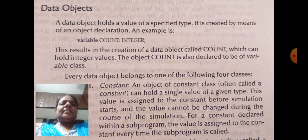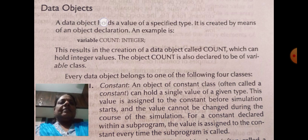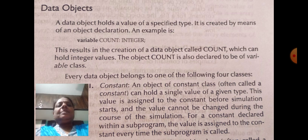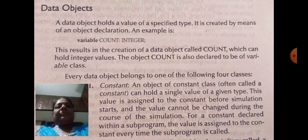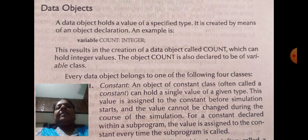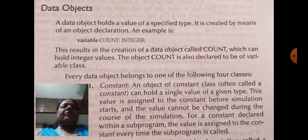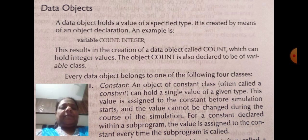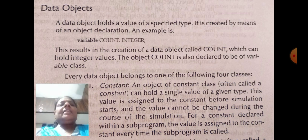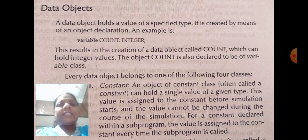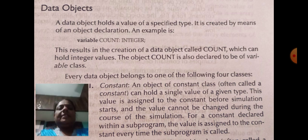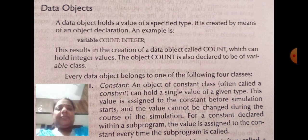What are the data objects? Data objects hold a value of a specified type — here 'type' refers to data types. Any object that holds the data is called a data object. It is created by means of an object declaration. There are mainly 4 types of data objects in VHDL: constants, variables, signals, and the file type.